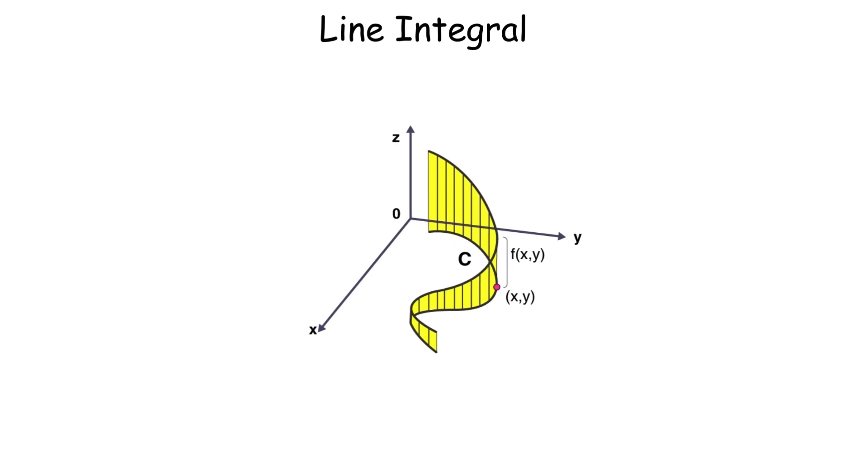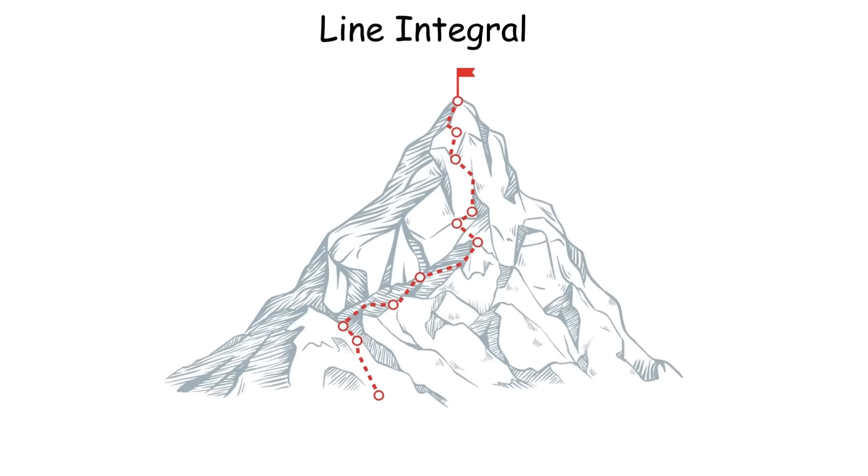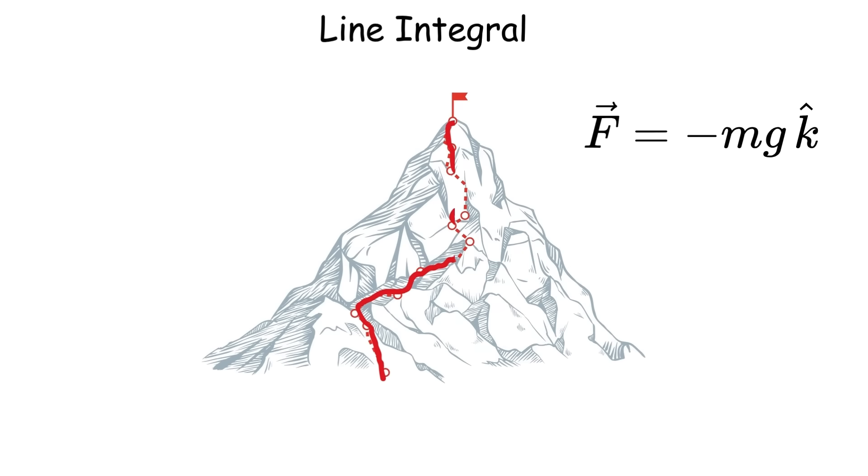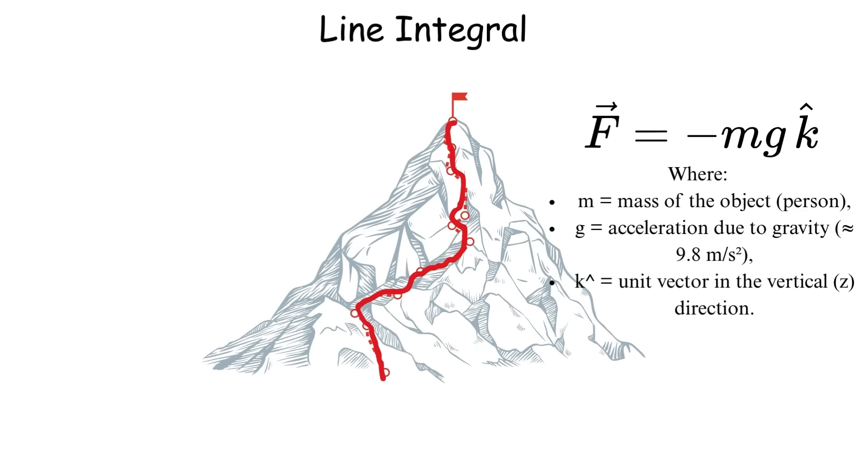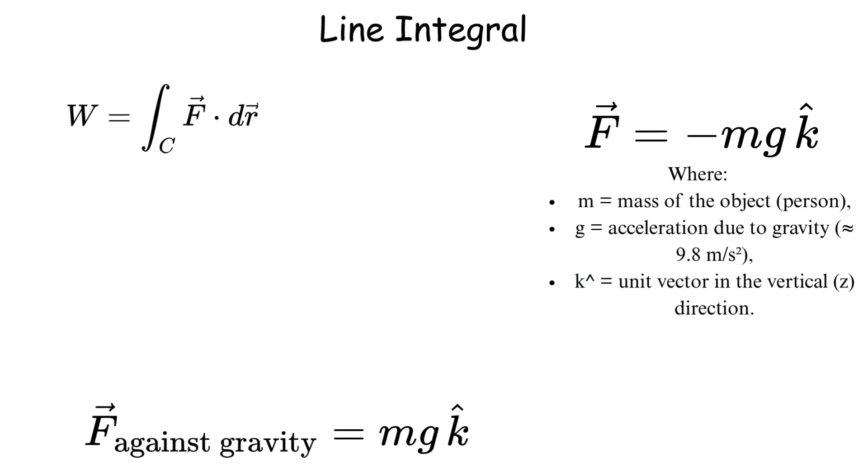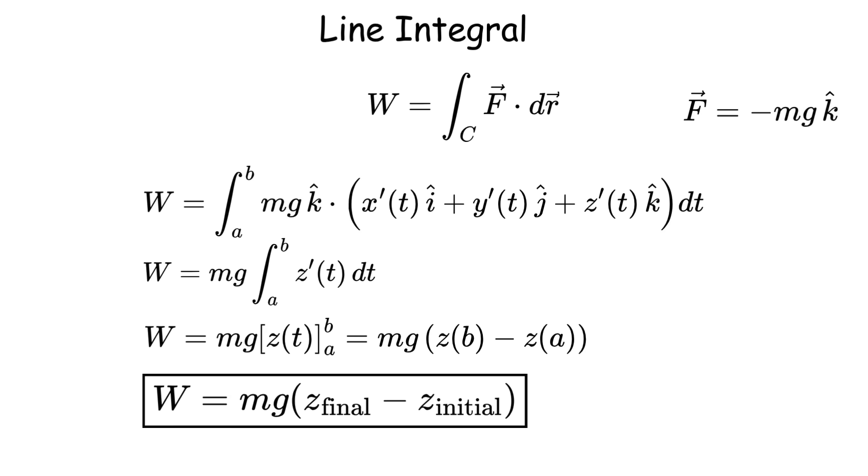Line integrals let you integrate along a curve instead of over an interval. Imagine you're walking along a winding mountain path, and you want to calculate the total work done against gravity. That's a line integral. You take your function, multiply it by a tiny piece of the curve, and add up all those pieces along the entire path.